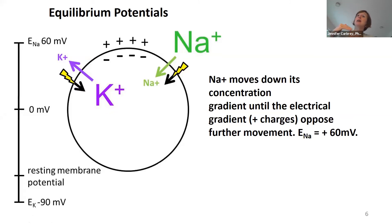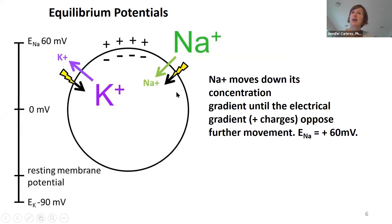The equilibrium potential is going to be the membrane potential that occurs whenever you open channels for that ion. Because of our gradient for sodium, if we open sodium channels, it's going to rush in until there's so many positives inside that just as much is rushing in because of the chemical gradient as is leaving because of the electrical gradient. And so the membrane potential at that point will be positive. That's why the equilibrium potential for sodium will be positive.